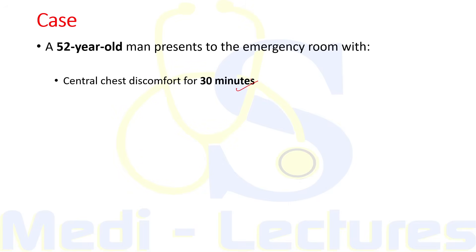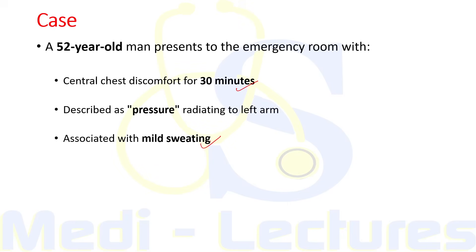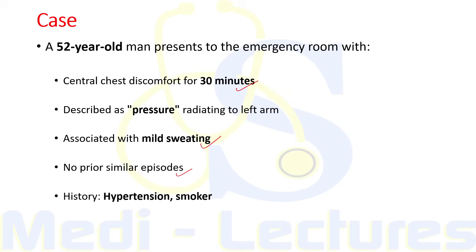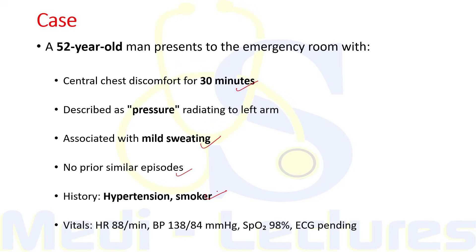A 52-year-old man presents to the emergency room with central chest discomfort for 30 minutes, described as pressure radiating to the left arm, associated with mild sweating. There is no prior similar episode. History of hypertension and smoking is present. Vitals: heart rate 88, BP 138/84, SpO2 98%, and ECG is pending. Let's use this real-world case to guide our discussion on how to approach chest pain — a very common but potentially dangerous situation.